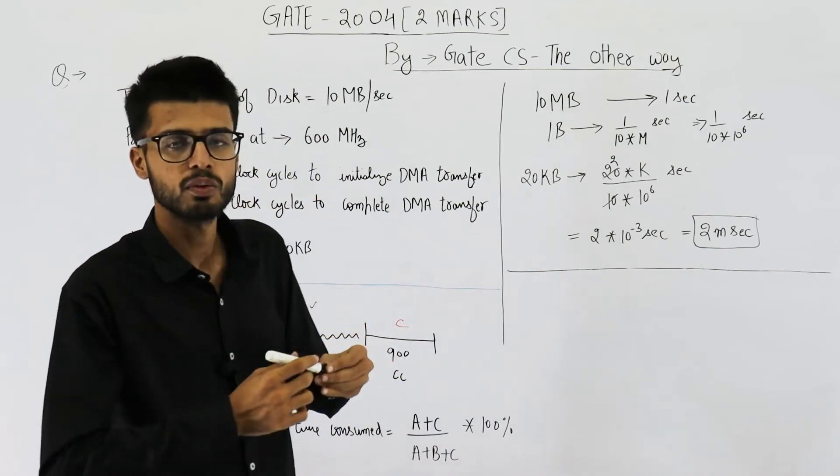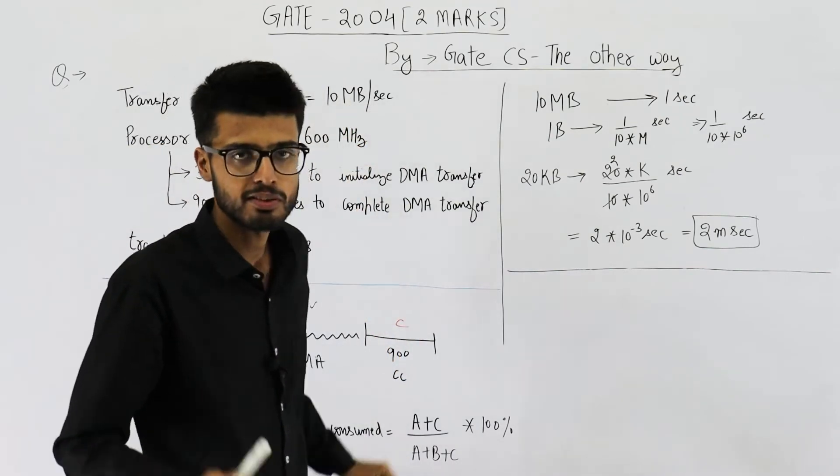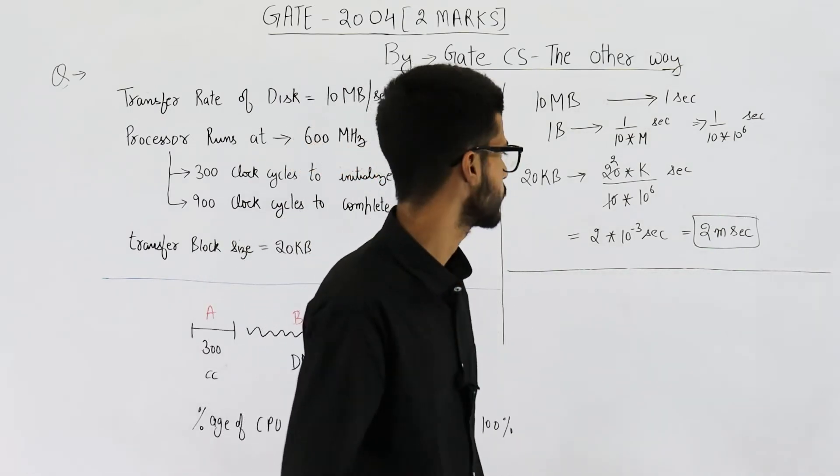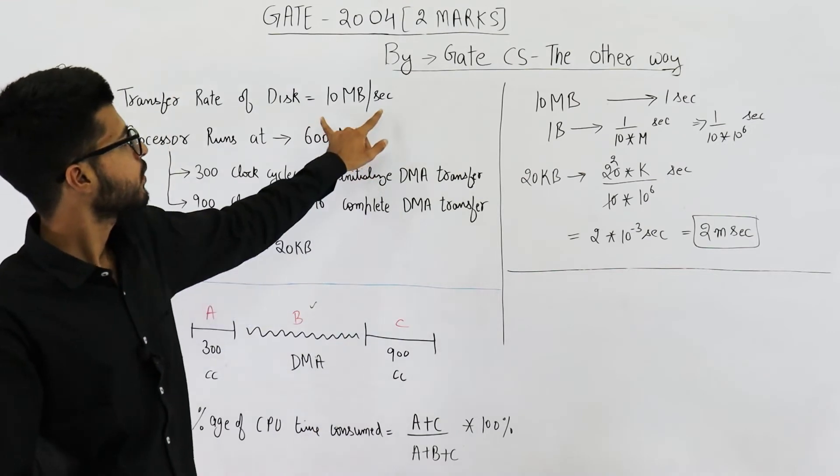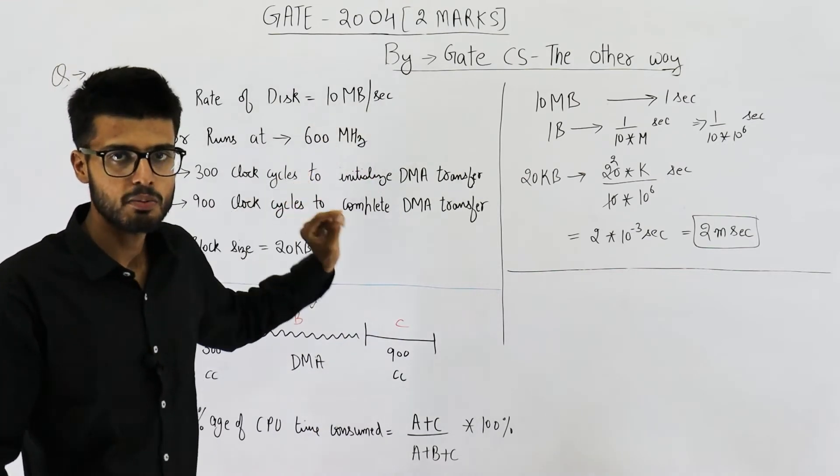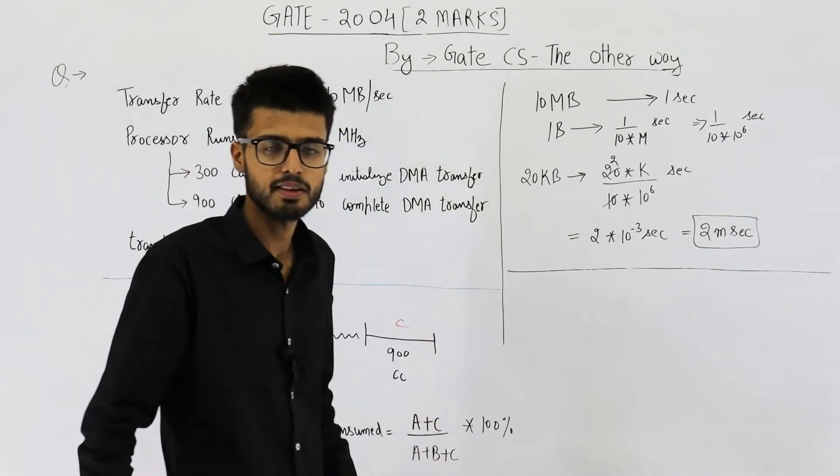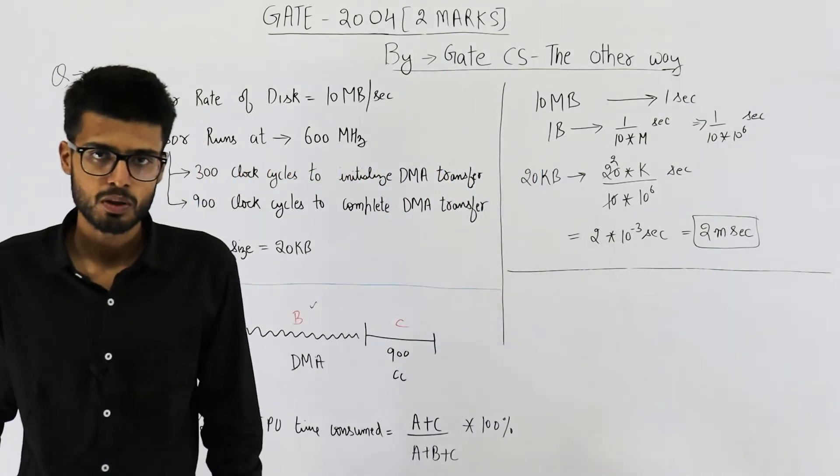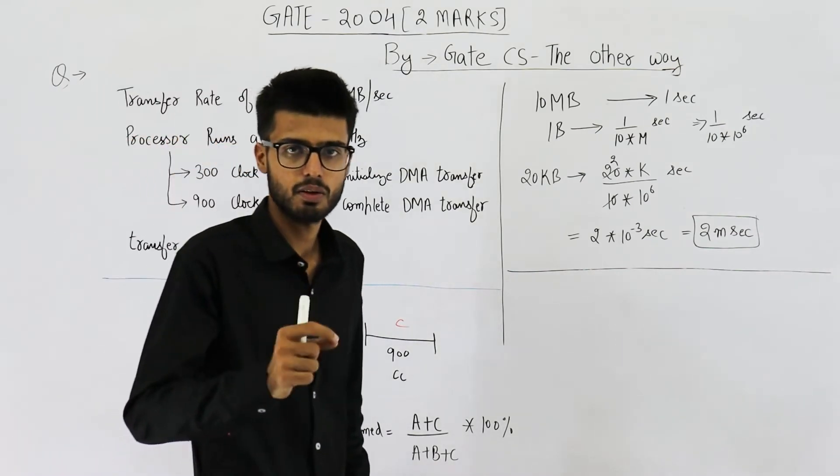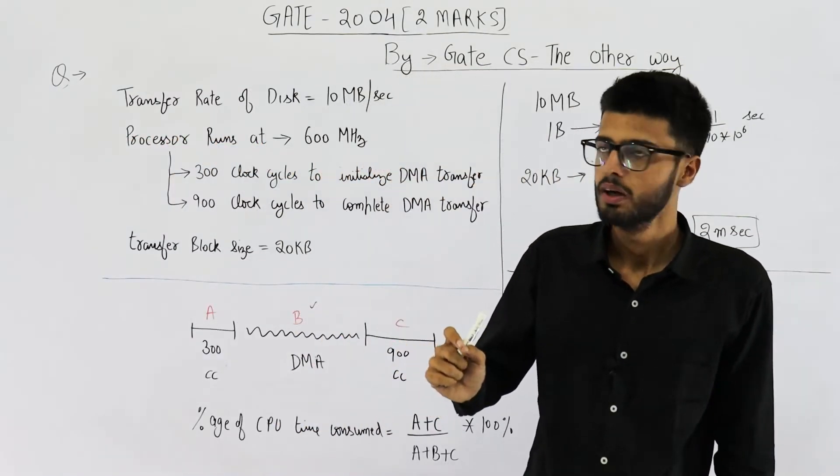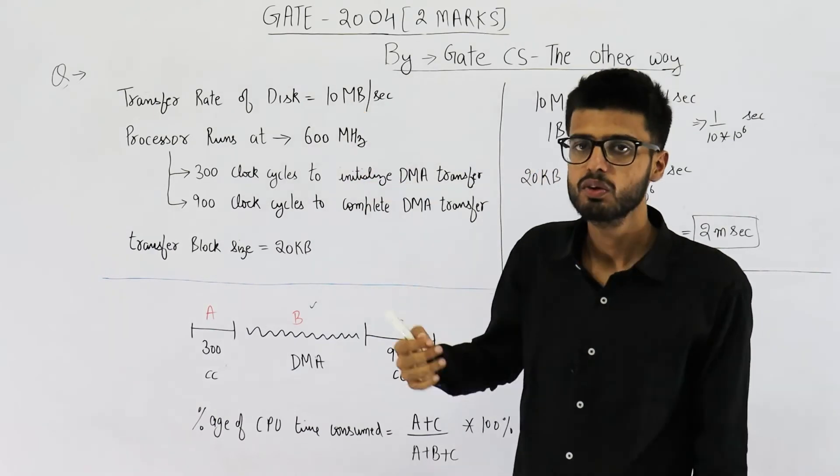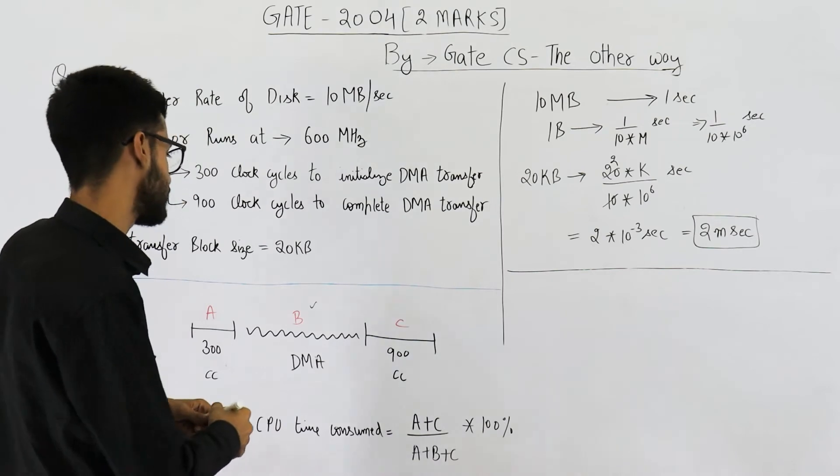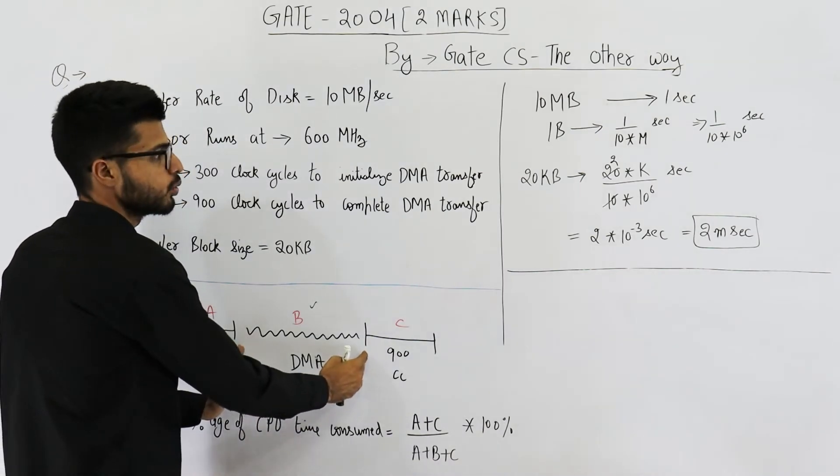Now one thing that you need to keep in mind is value of M is not 2 raised to the power 20. It's actually 10 raised to the power 6. Because here we are talking about speeds. It's not the amount of data. It is speed or you can say it's bandwidth. Now we have already seen that whenever it's some amount of data, the values of K, M and G are powers of 2. But whenever it's speed, the values are in powers of 10.